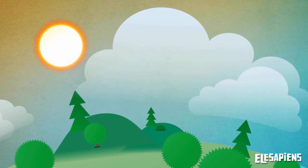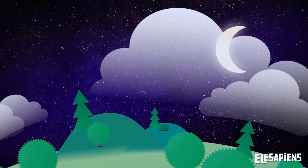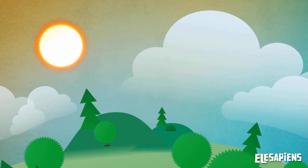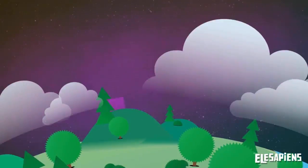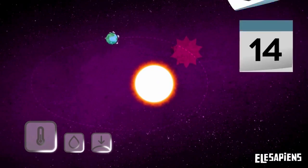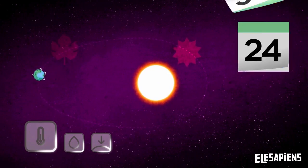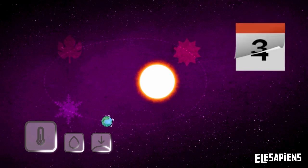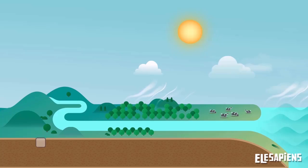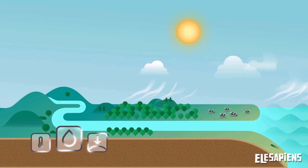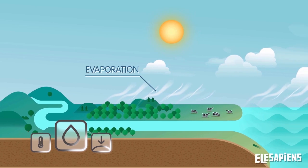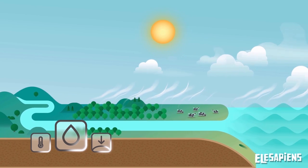Temperature is the amount of heat or cold in the atmosphere. It changes throughout the day, seasons and regions according to the position of the Earth relative to the sun. Humidity is the amount of water in the atmosphere, evaporated by the heat of the sun.